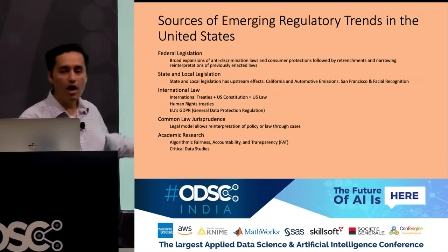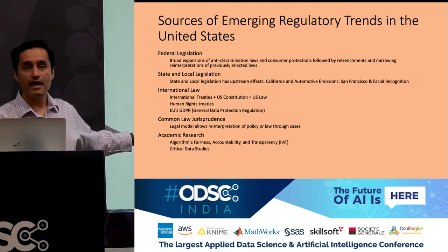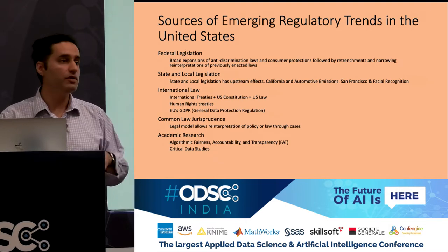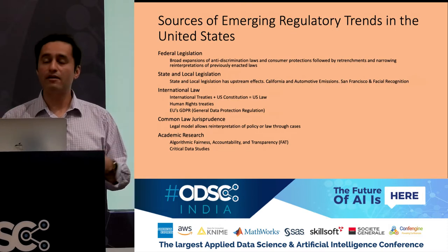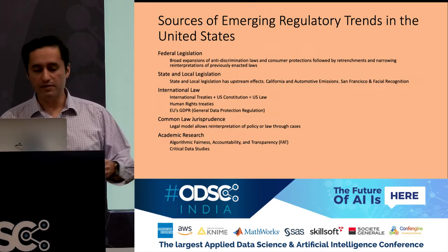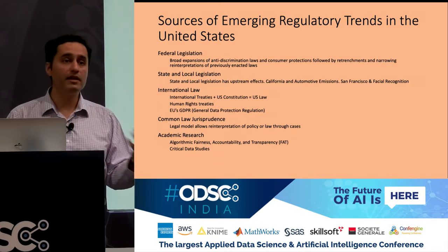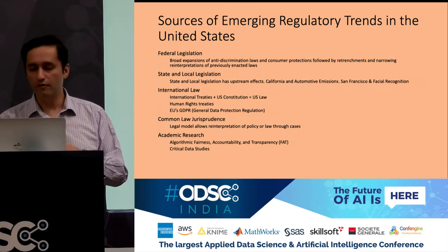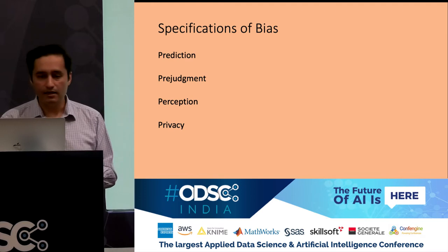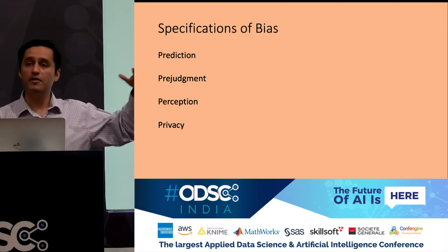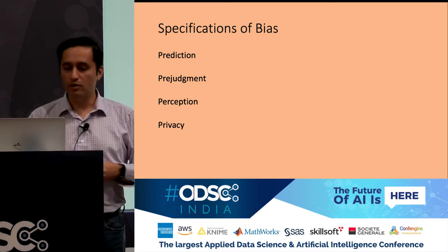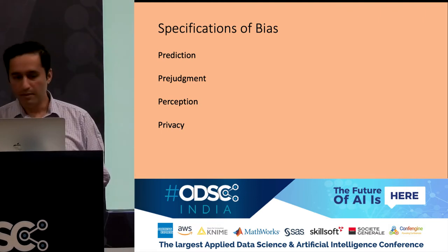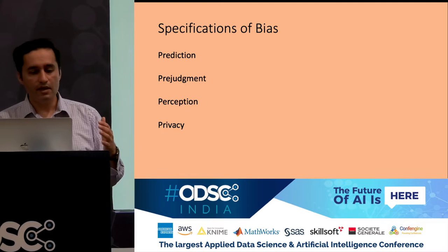There is a lot of active research in the academic community around fairness, algorithmic accountability, and transparency. You can look for the acronym FAT — Fairness, Accountability, and Transparency — as well as an area in the humanities called critical data studies, which looks at social power structures and how technologies are enforcing those. Getting more technical, we can think about specifying bias in at least four categories: prediction bias, pre-judgment, perception, and substantive rights.